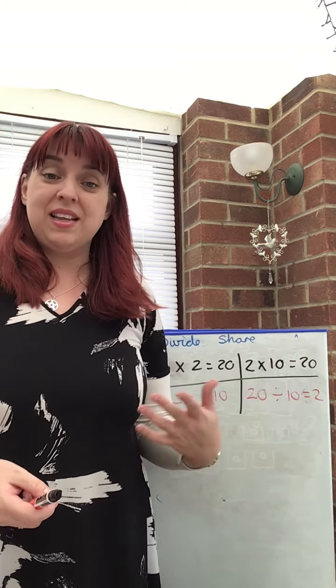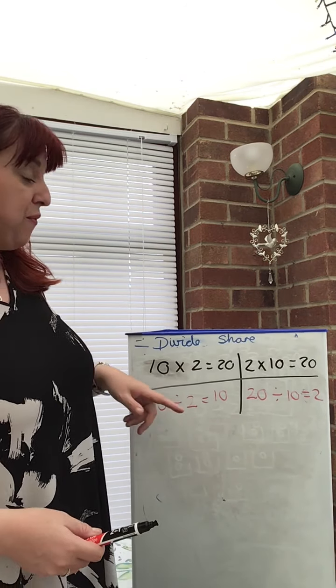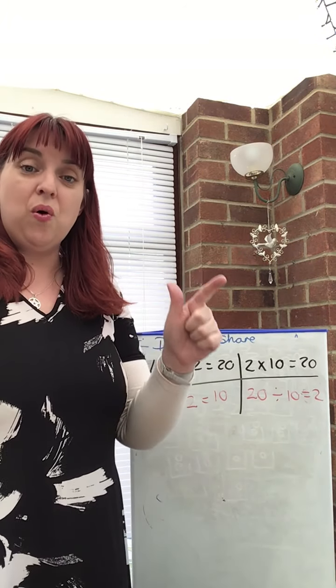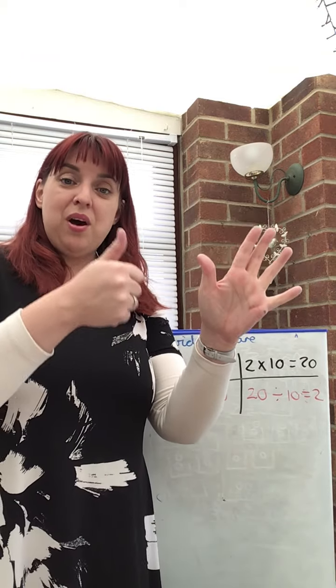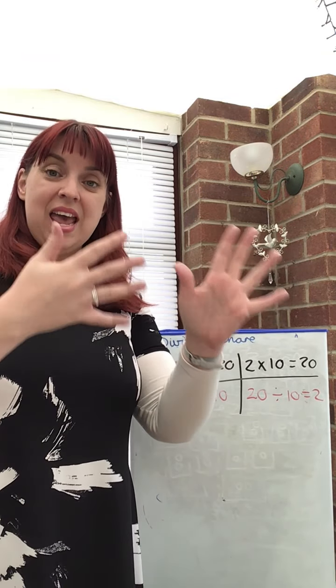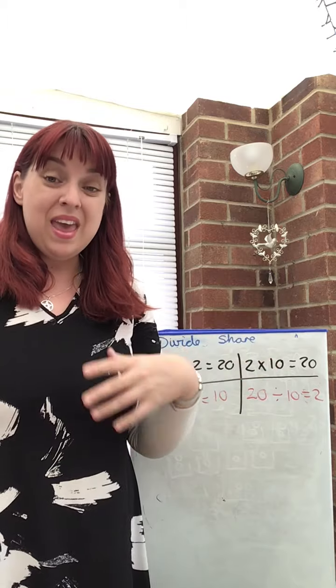It is the same effect as counting in. So, where I had twenty, I could literally count forward in my twos. Two, four, six, eight, ten, twelve, fourteen, sixteen, eighteen, twenty. I had ten equal groups.